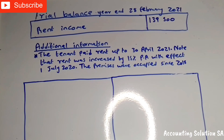Remember, at the beginning under the trial balance they said our financial year is ending 28 February 2021. The principle of the income statement says we have to record only until year end, which is 28 February 2021. So in this case we find that the rent has been paid up to April 2021, which means that we paid one month in advance.